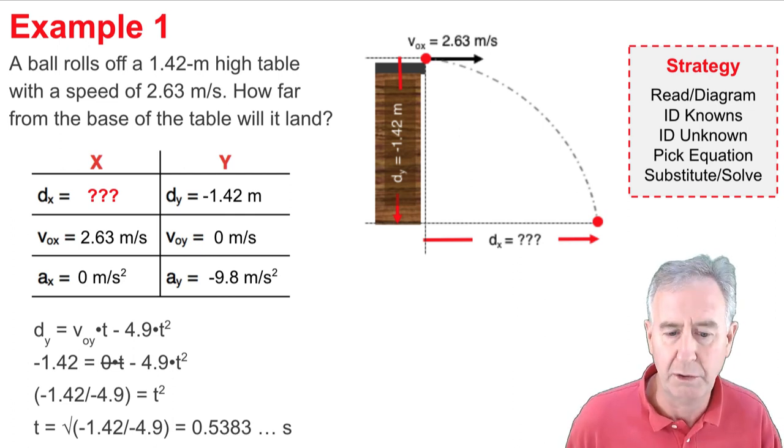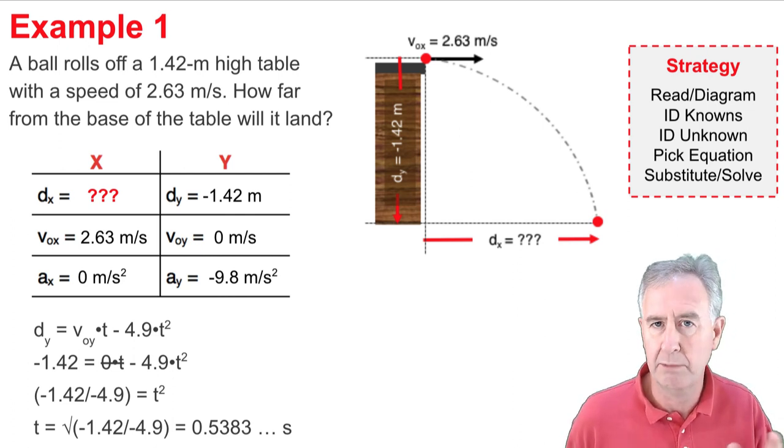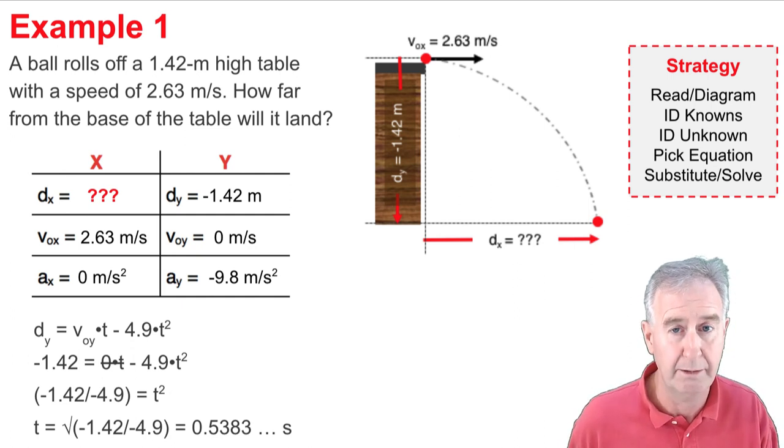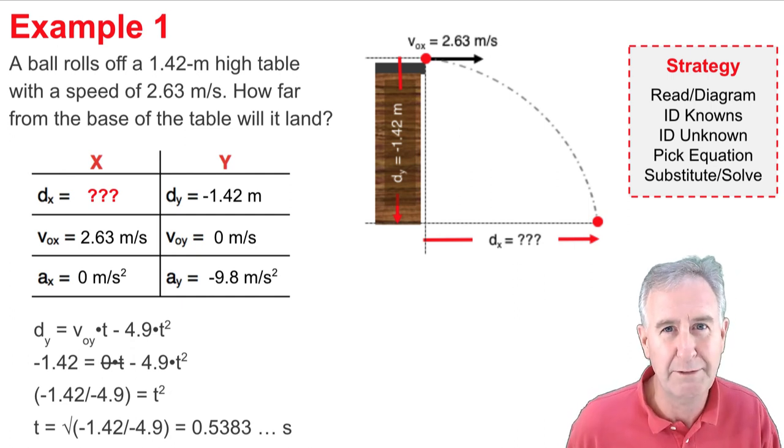And I'm not going to round the value. I'm just going to write down 0.5383, and I'm going to keep the number on my calculator, because I'm going to use that number. Now, take a deep breath. You're ready to finish up.